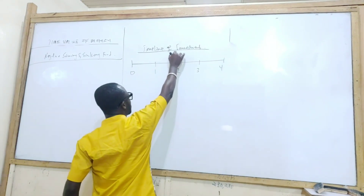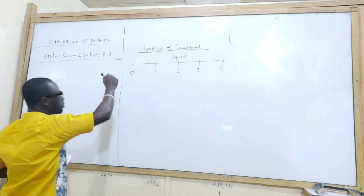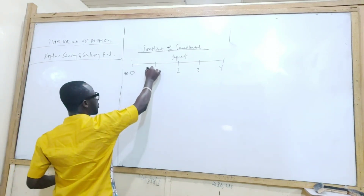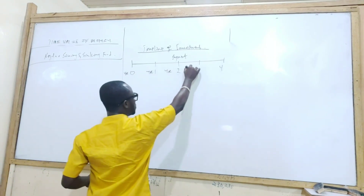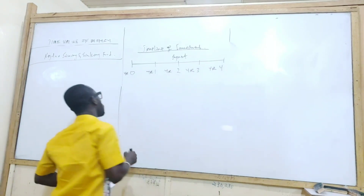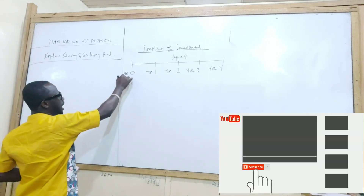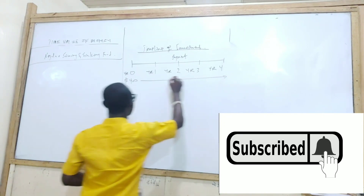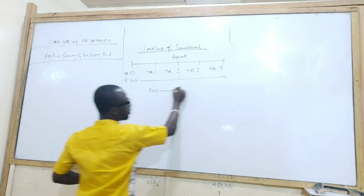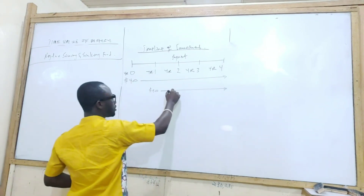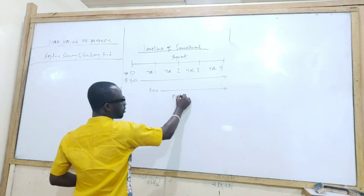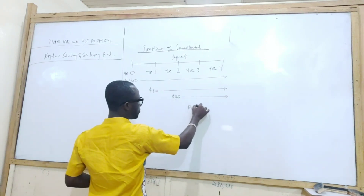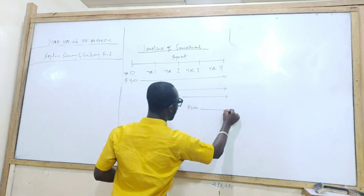On the payment timeline, at year zero we have $400 — this will be there for four years. Another $400 at year one will be there for three years. Another $400 at year two will be there for two years. And another $400 at year three will be there for one year.